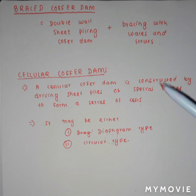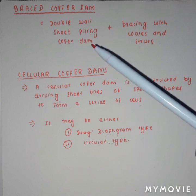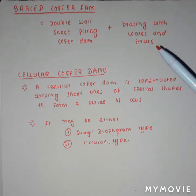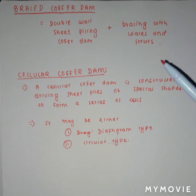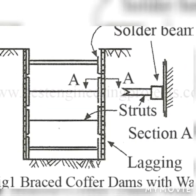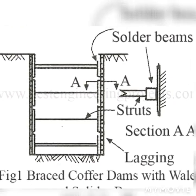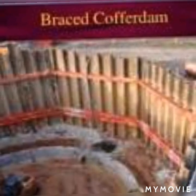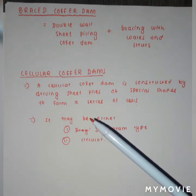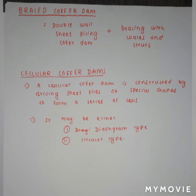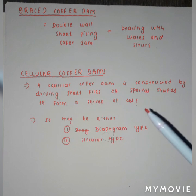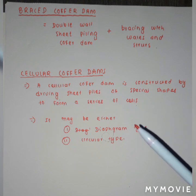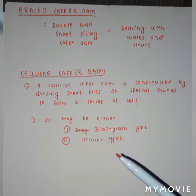The braced cofferdam is a combination of double wall sheet piling cofferdam with bracing using wales and struts. Finally, the cellular cofferdam is constructed by driving sheet piles of special shapes to form a series of cells. Cellular cofferdams can be either diaphragm type or circular type.